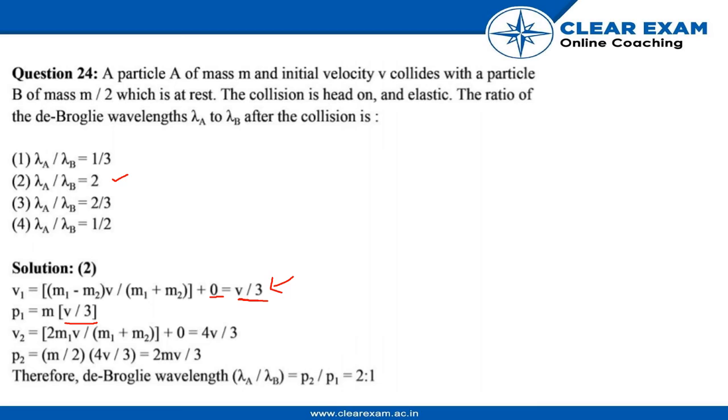Now similarly for V2, it would be 2m1 v by m1 plus m2 plus 0, which would be 4v by 3.